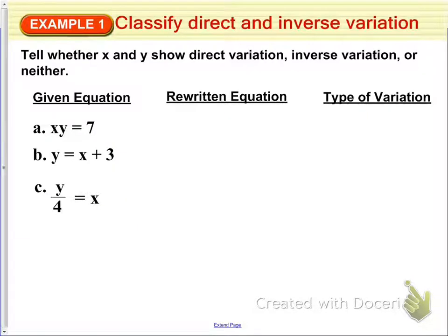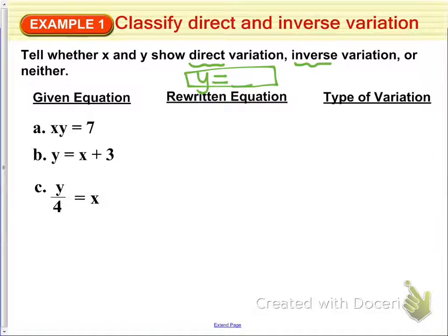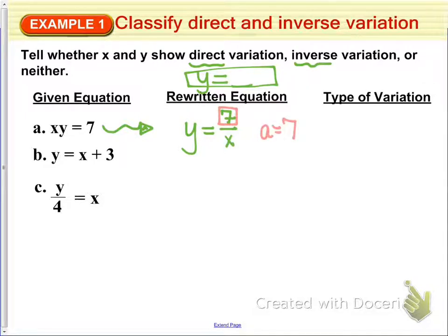In example one, we want to classify direct and inverse variation equations. For equation A, we have xy equals 7. Before we can tell if it's direct, inverse, or neither, we always want to rewrite it as y equals something. So we rewrite it as y equals 7 over x. Because we are dividing and 7 is our a value, this is inverse variation.